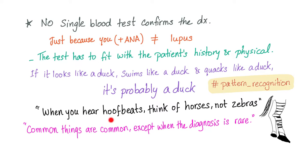Also, you've heard: when you hear hoofbeats, think of horses, not zebras. Both horses and zebras can have hoofbeats; both lupus and rheumatoid arthritis can have a positive ANA. But there is a difference — horses and zebras are different. You can also learn that common things are common, so try to focus on the common things first.